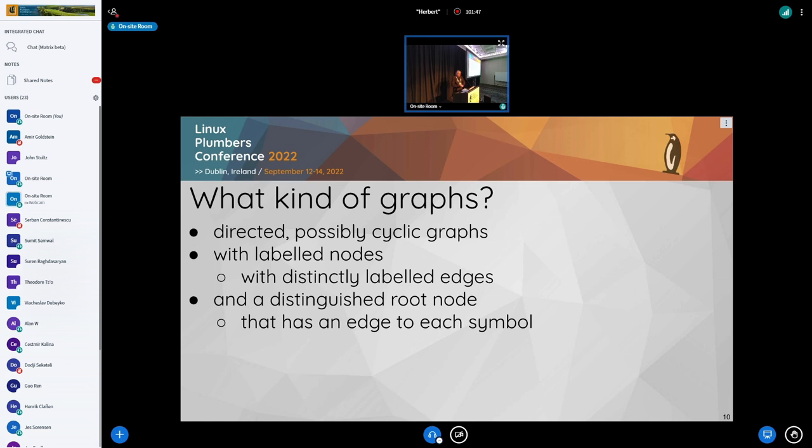Just to recap, these are the kinds of graphs I mean. Graphs have nodes with labels and edges with labels. And we need to start somewhere when we do a comparison. So typically, we start with a symbol table and compare all the symbols. So we just need an edge to each symbol. That's my mental model for thinking about ABI representations, even though there are multiple concrete representations out there.